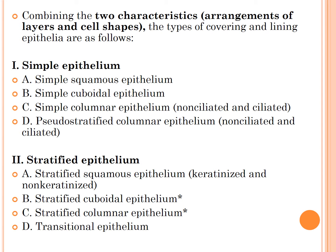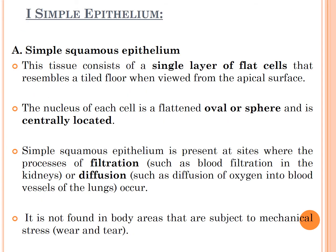The first class is simple epithelium, which is further classified into four types: simple squamous epithelium, simple cuboidal epithelium, simple columnar epithelium (non-ciliated and ciliated), and pseudostratified columnar epithelium (non-ciliated and ciliated). The second class is stratified epithelium, classified into four types: stratified squamous epithelium (keratinized and non-keratinized), stratified cuboidal epithelium, stratified columnar epithelium, and transitional epithelium.